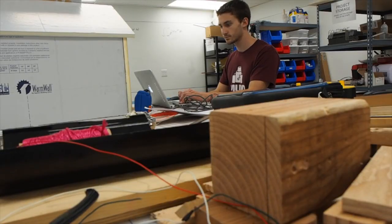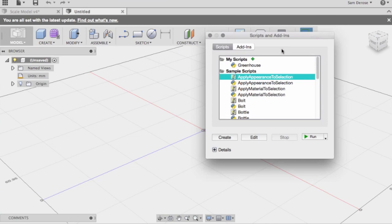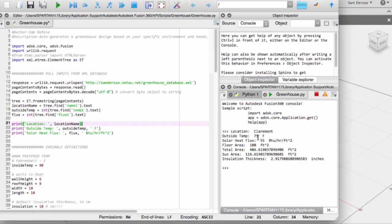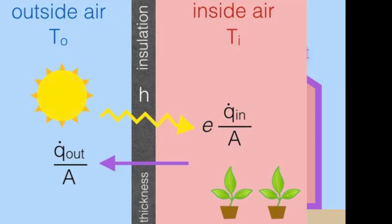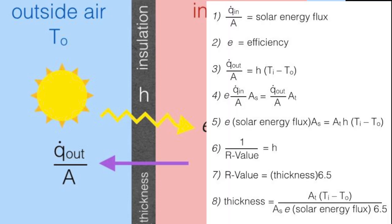This project aims to demonstrate several chunks of this closed-loop workflow. A Python script pulls temperature and solar flux data from the Internet, then uses a thermal model to determine how thick the insulation in the greenhouse should be.